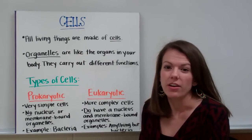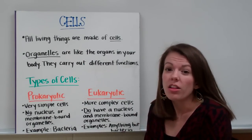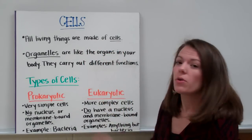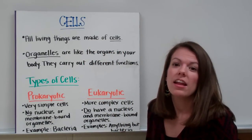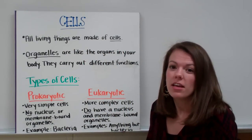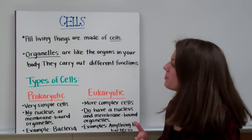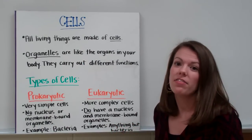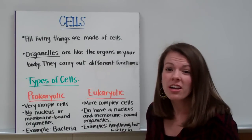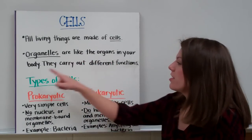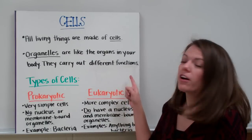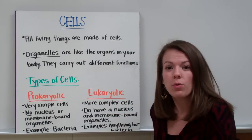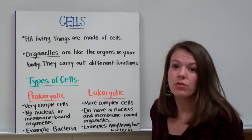Now for a review on cells. All living things on Earth are made of cells — whether it's a plant, an animal, a fungus, or a bacterium. Cells can't survive unless they have organelles. Organelles are kind of like the organs in your body; they carry out different functions. Just like you have a stomach that digests food, you have an organelle that helps break down food in your cells.